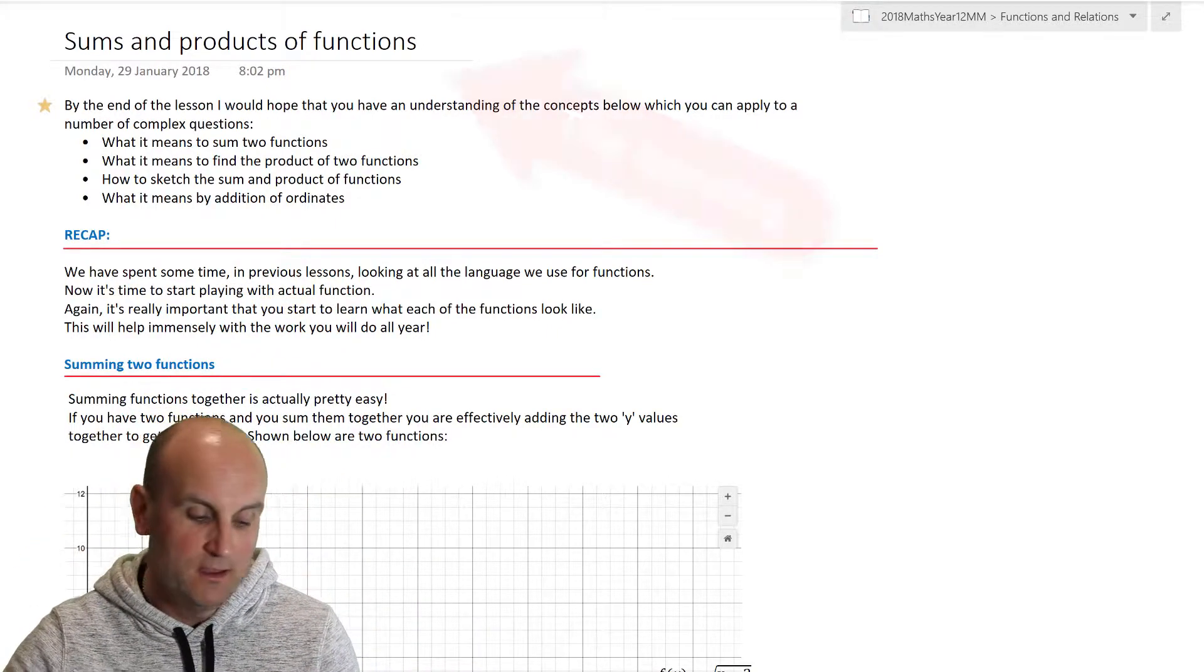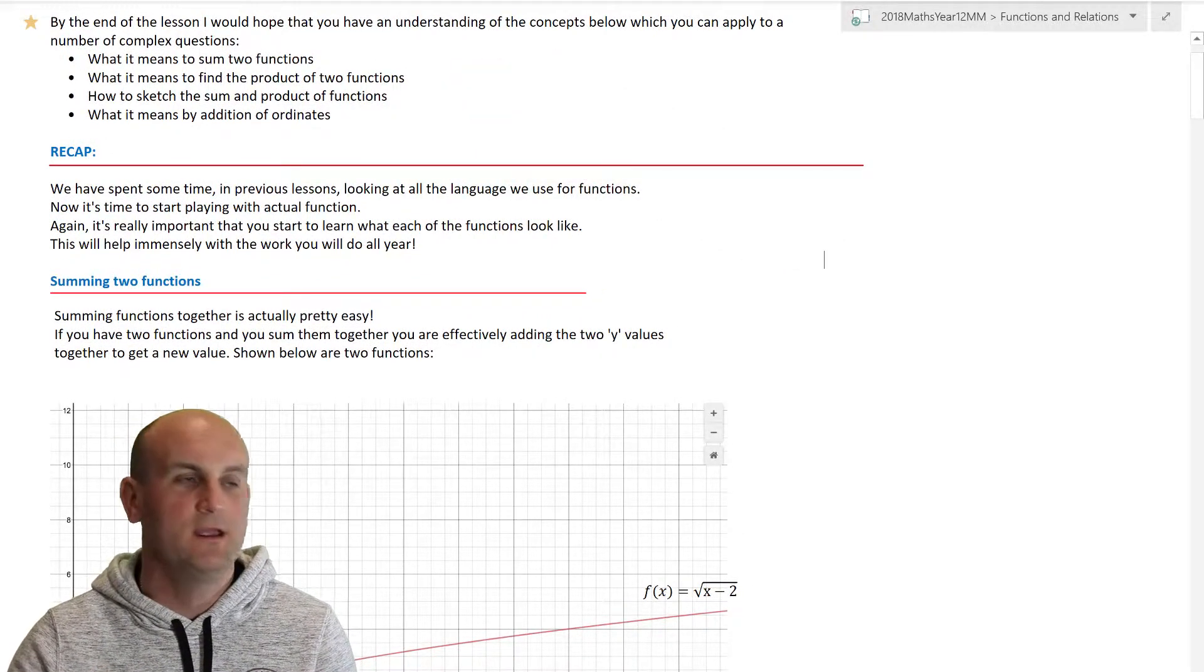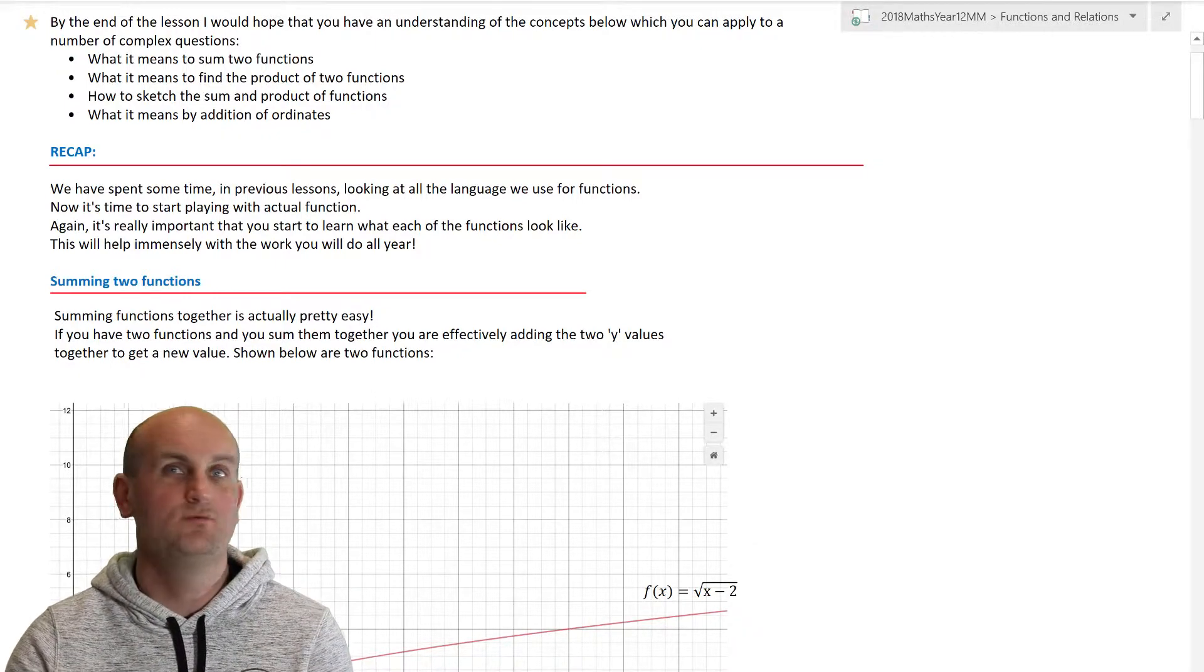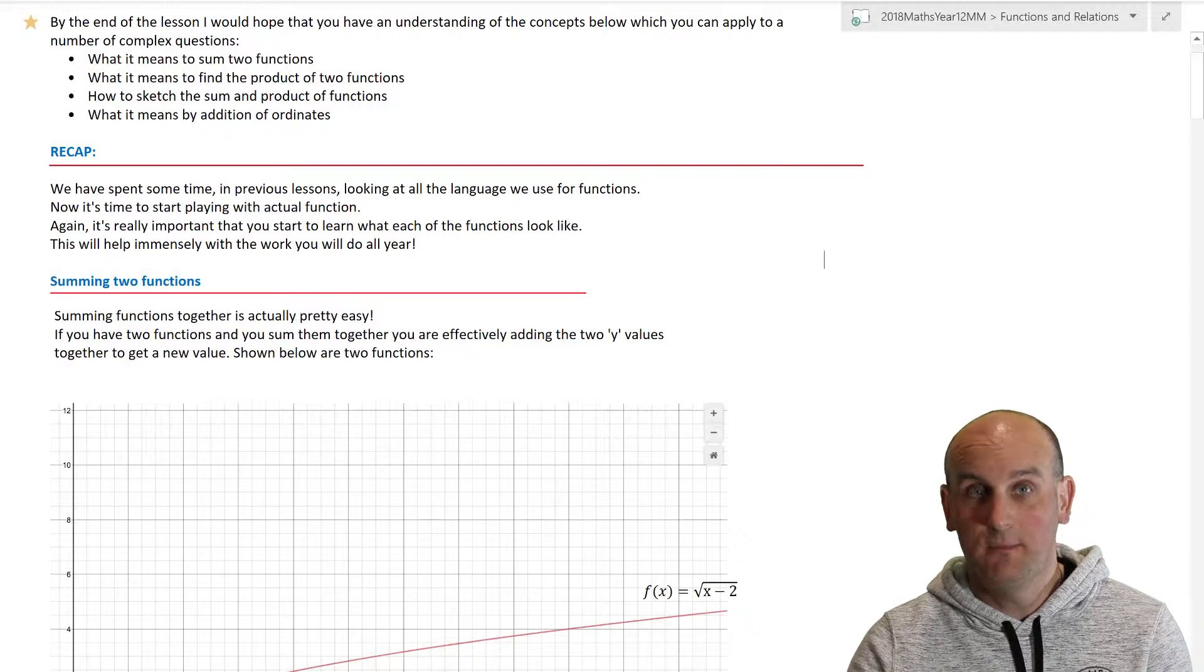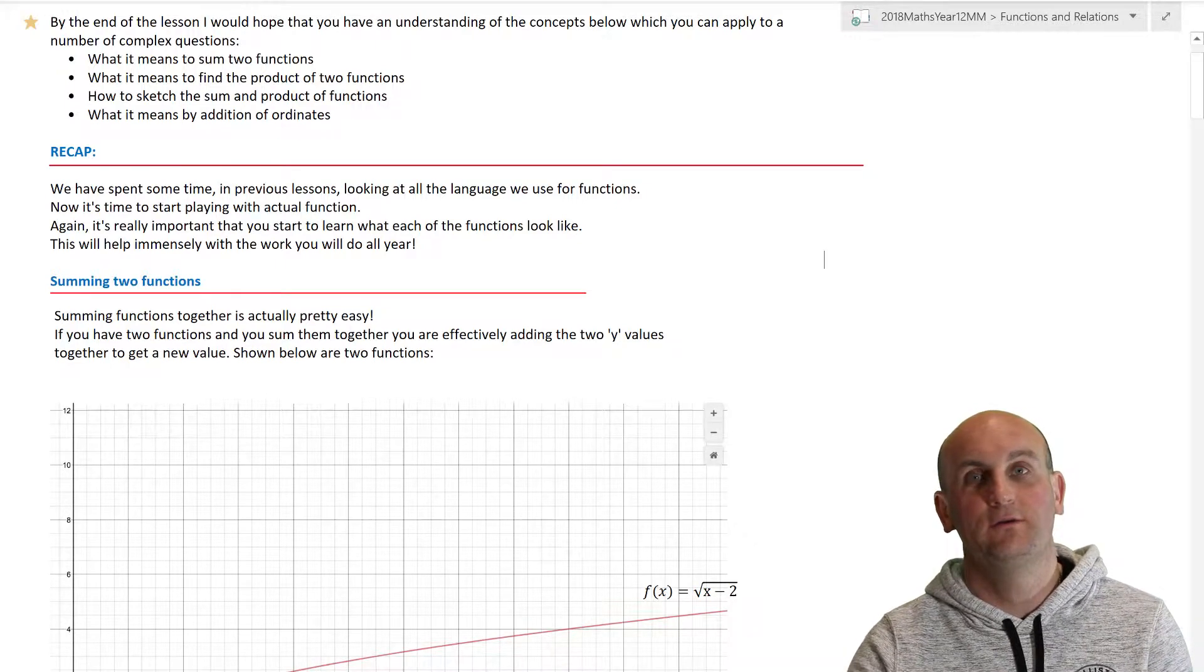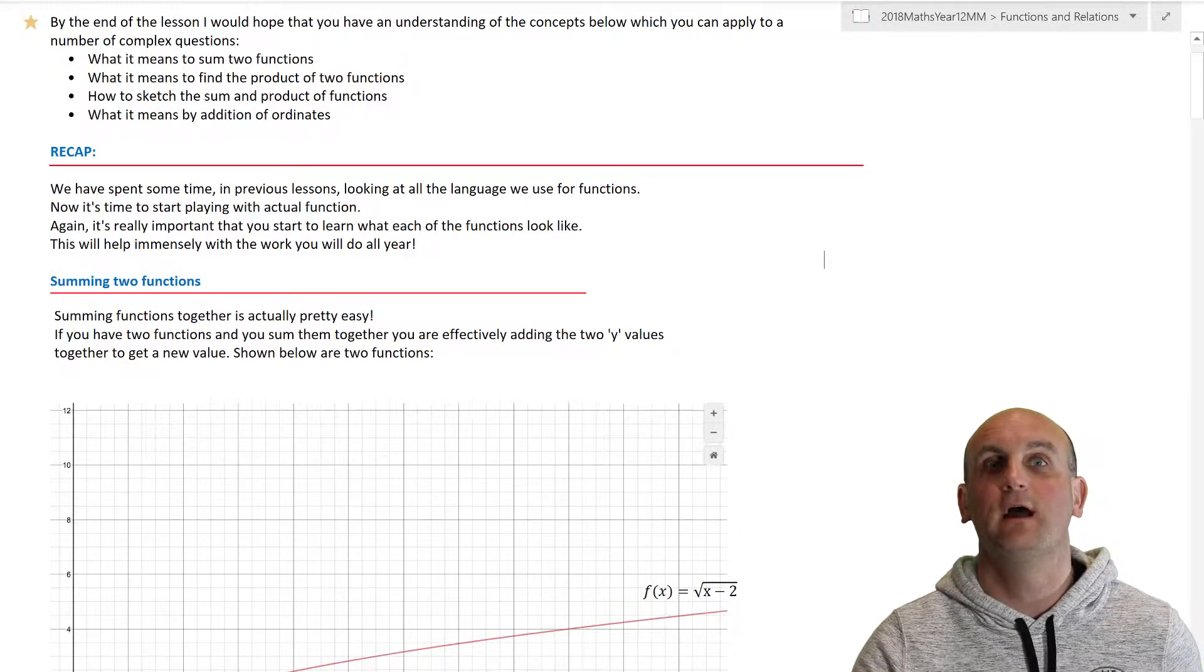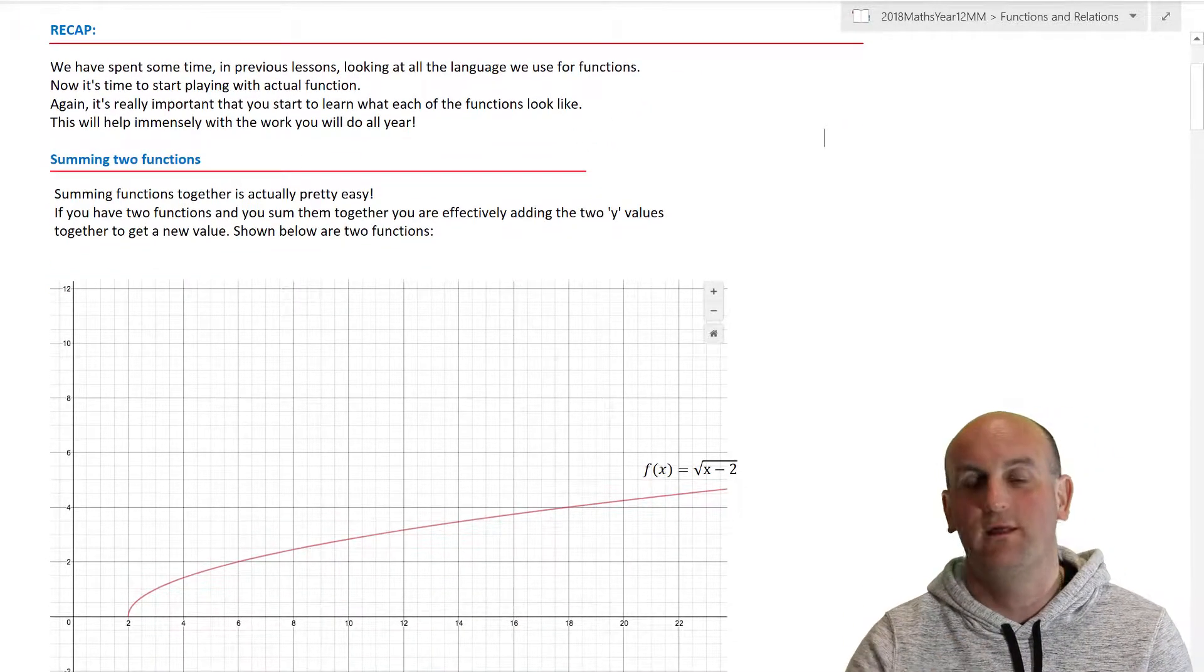But enough of that stuff. Now, let's get on to the learning which is highlighted above. It seems a bit weird that we are here in Methods 3 and 4 or A Levels, Discrete Maths or Algebra 1, talking about sums and products of functions. This video is going to look at what it means to sum two functions, to find the product of two functions, to sketch them and know what it means by addition of ordinates. And we're going to try and say Barry's being added again, and I am his nemesis. Basically, I'm going to try and break it down to make it easy.